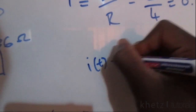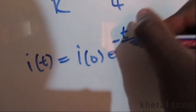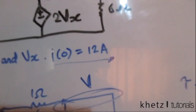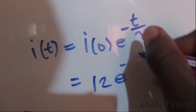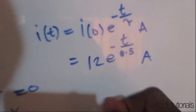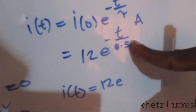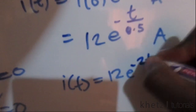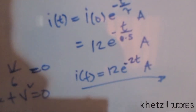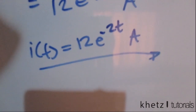Now we combine everything into the final equation. i(t) equals the initial condition times e to the power of negative t divided by the time constant. The initial condition is given as 12 amperes, and the time constant is 0.5, so i(t) equals 12e to the power of negative 2t amperes.